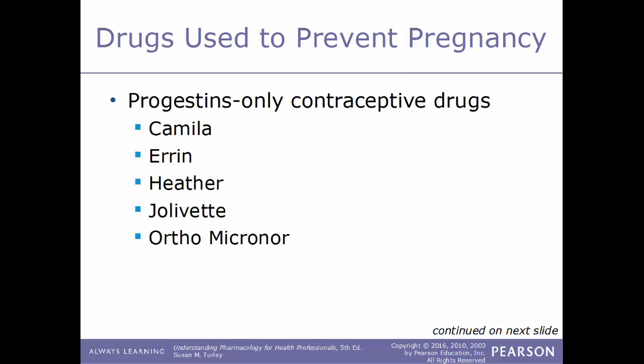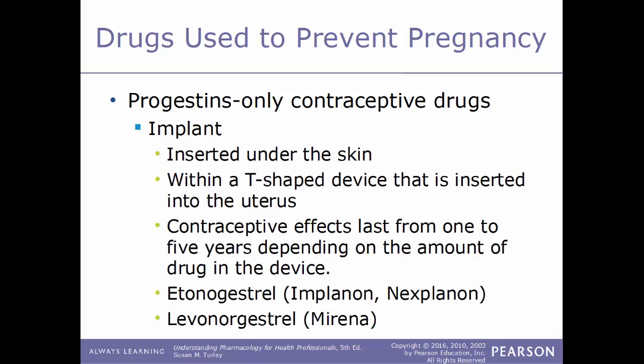Examples of progestin-only oral contraceptive drugs include Camila, Errin, Heather, Jolivette, and Ortho Micronor.